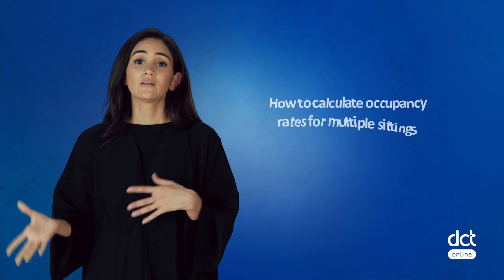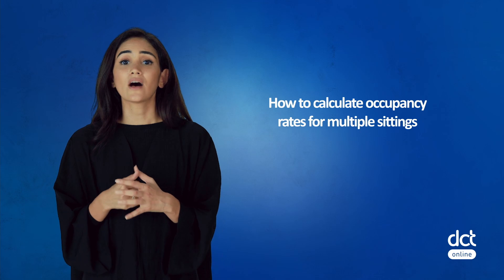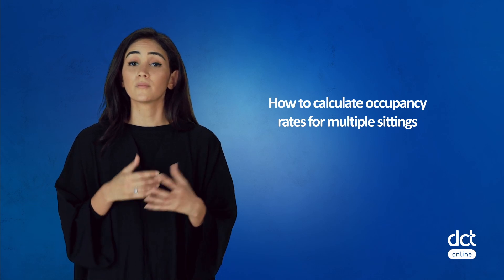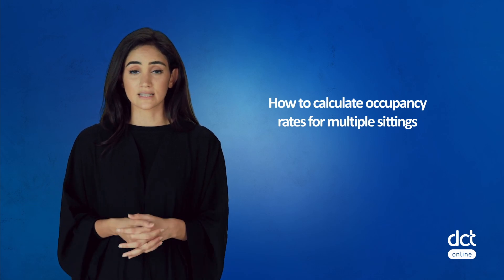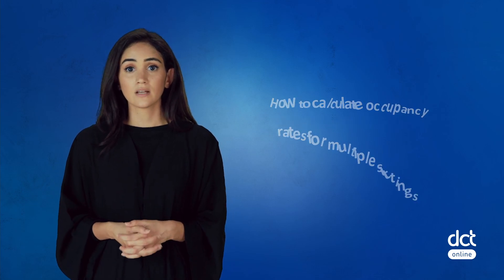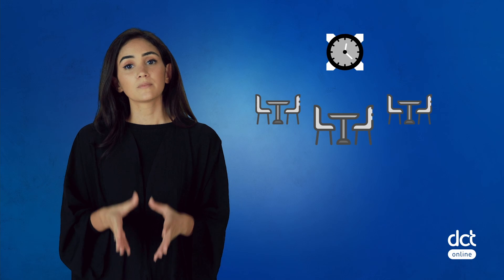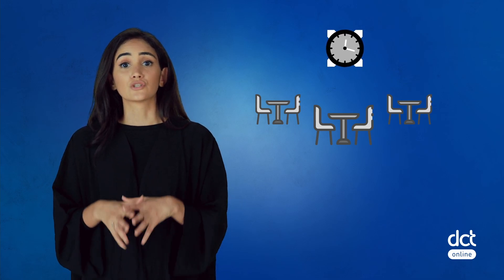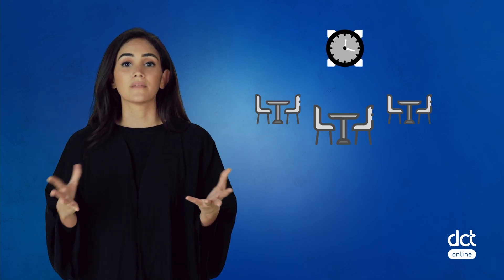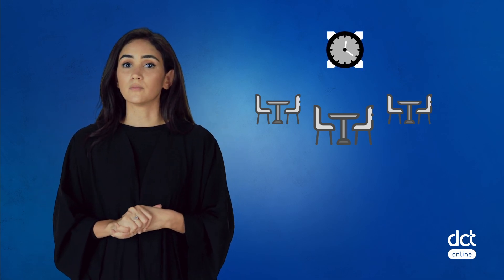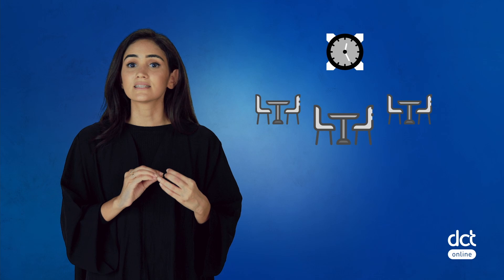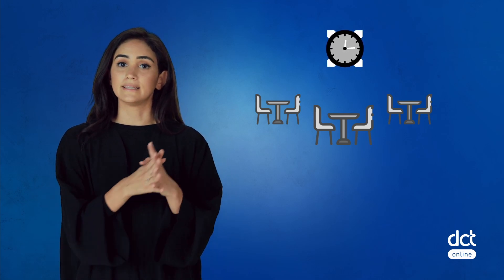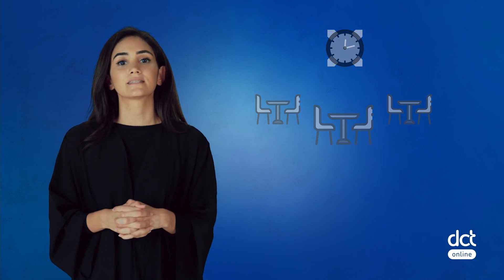Now let's take an example that shows you how to calculate occupancy rates for multiple sittings. For multiple sittings, it is important to capture the total time that tables are available in minutes, as well as the total time that tables are occupied in minutes.